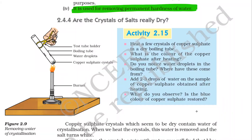Activity 2.15: Heat a few crystals of copper sulfate in a dry boiling tube. What is the color of copper sulfate after heating? Copper sulfate crystals are blue in color. The formula of copper sulfate taken initially is CuSO₄·5H₂O — it is blue in color. What is the color of copper sulfate after heating?